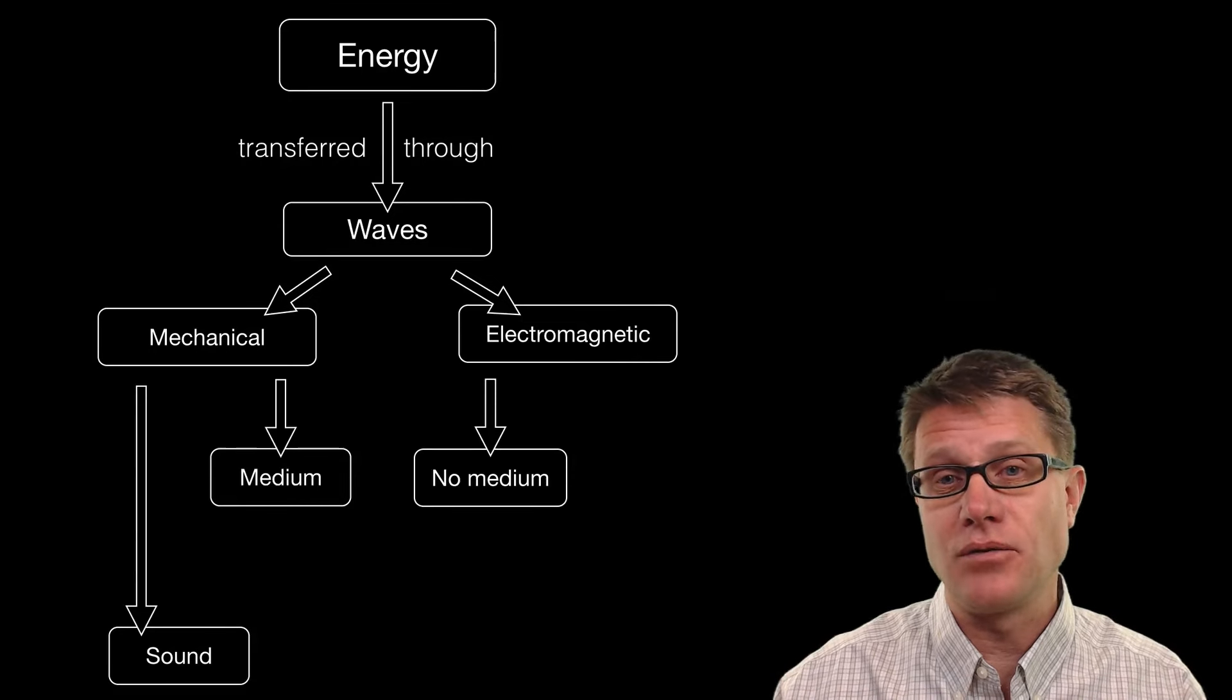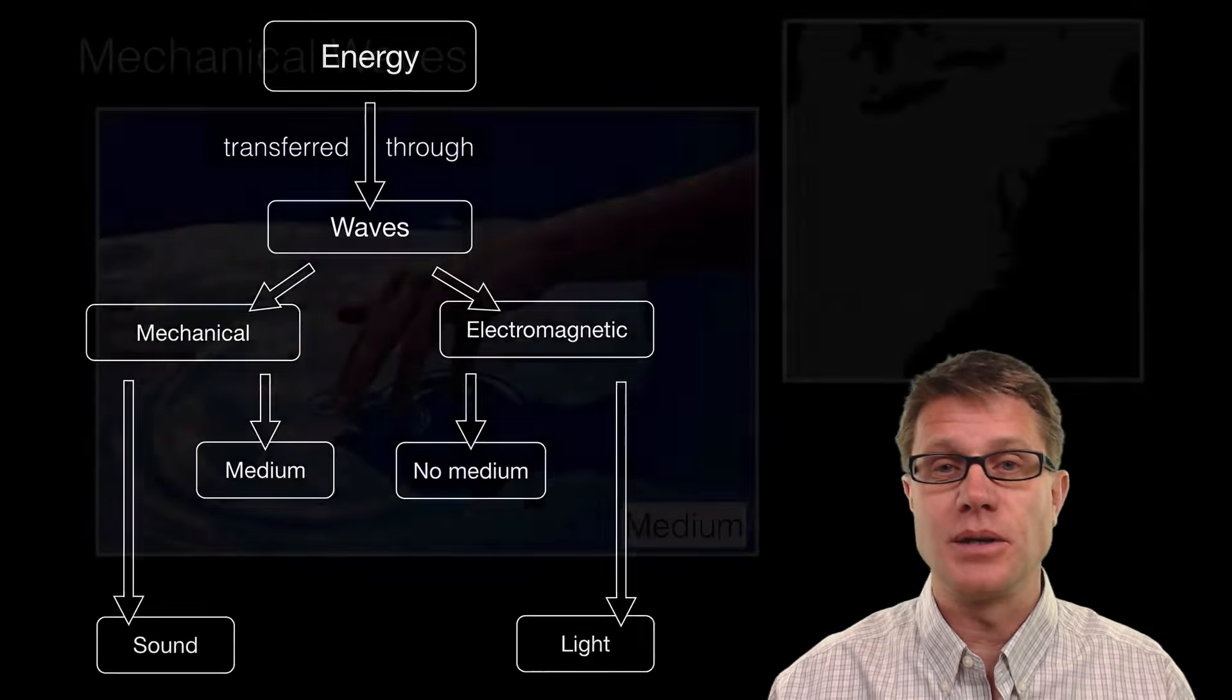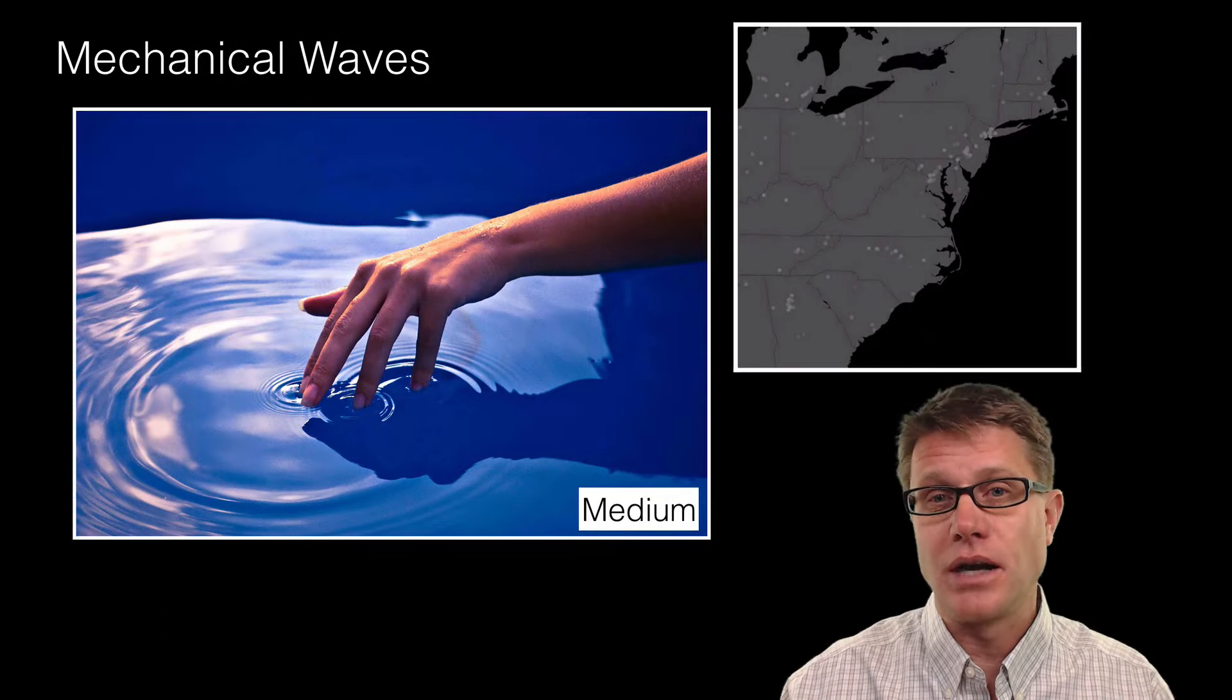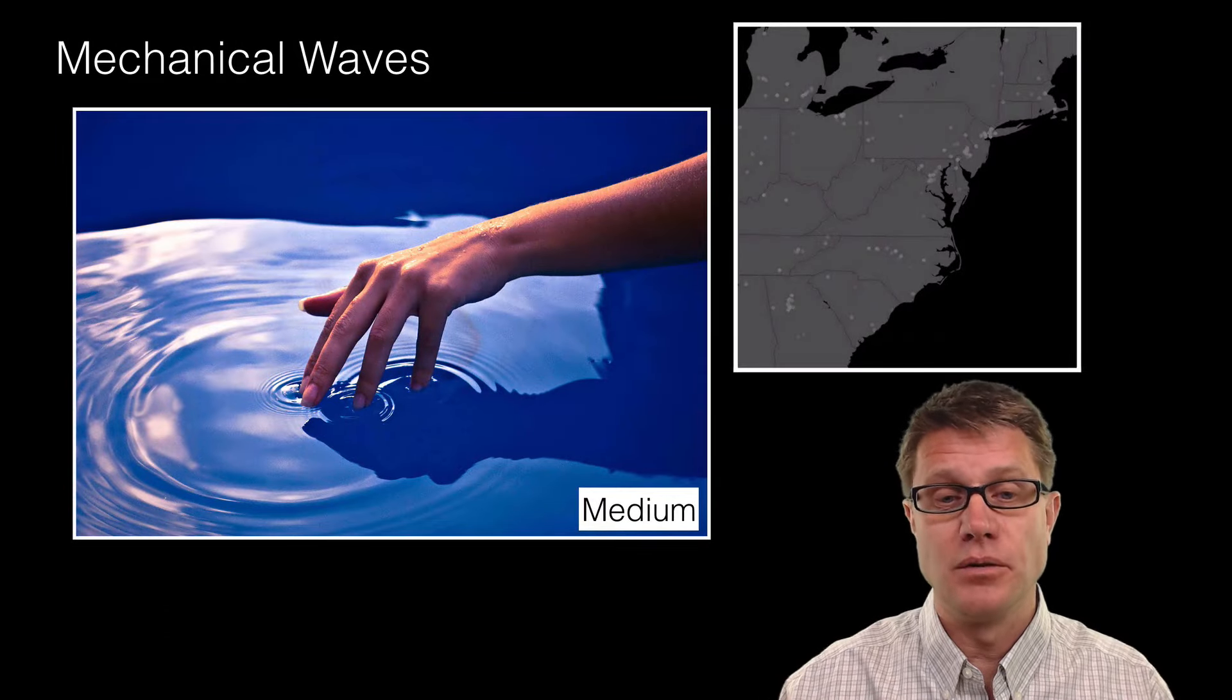An example of a mechanical would be sound waves. An example of electromagnetic could be light. And so mechanical waves require some medium to move through.